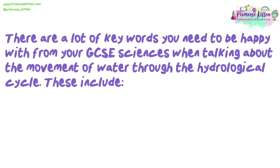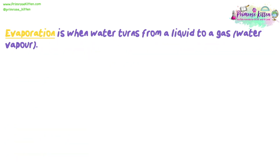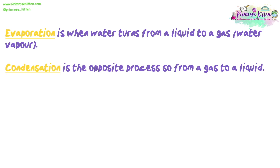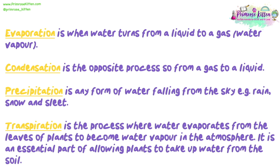There are lots of key words you need to be happy with from your GCSE science when talking about the movement of water through the hydrological cycle. These include evaporation, condensation, precipitation and transpiration. Evaporation is when water turns from a liquid to a gas. Condensation is the opposite process — from a gas to a liquid. Precipitation is any form of water falling from the sky, for example rain, snow and sleet. Transpiration is the process where water evaporates from the leaves of plants to become water vapour in the atmosphere, and it is an essential part of allowing plants to take up water from the soil.